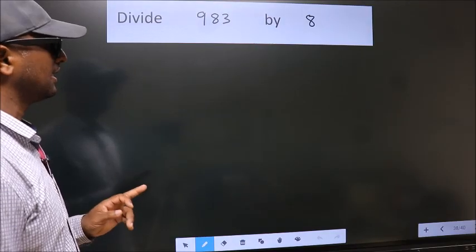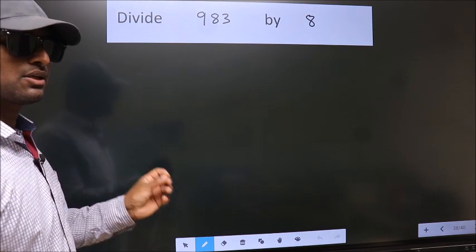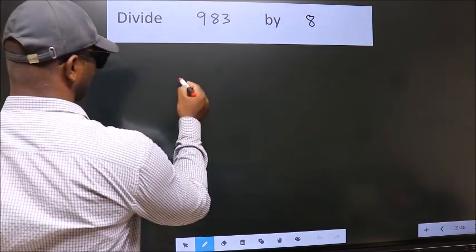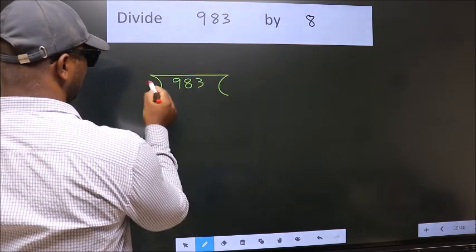Divide 983 by 8. To do this division, we should frame it in this way: 983 here, 8 here.